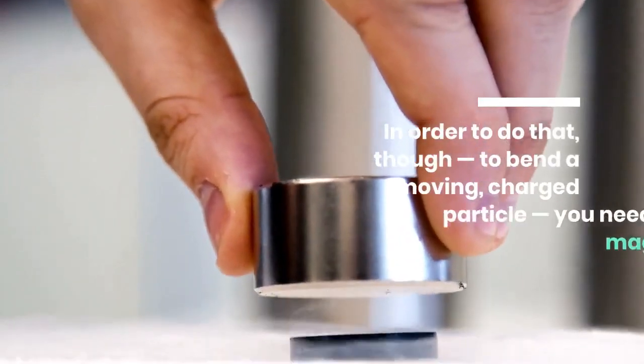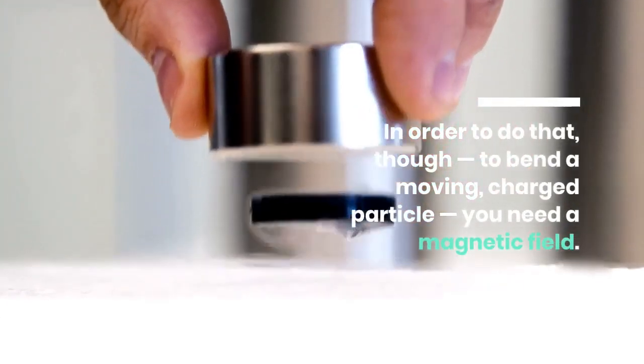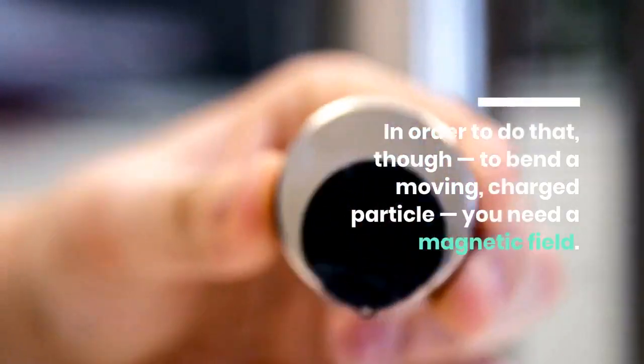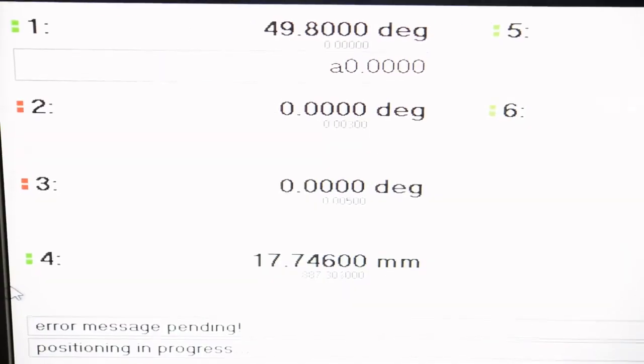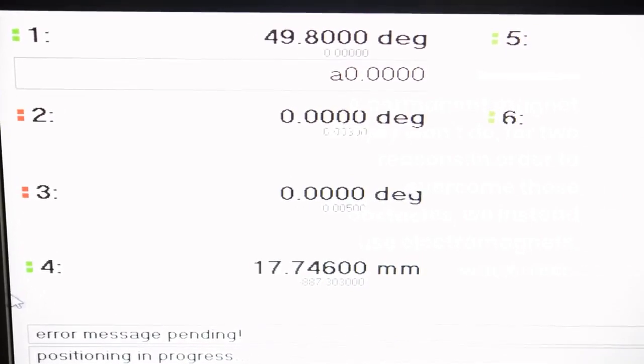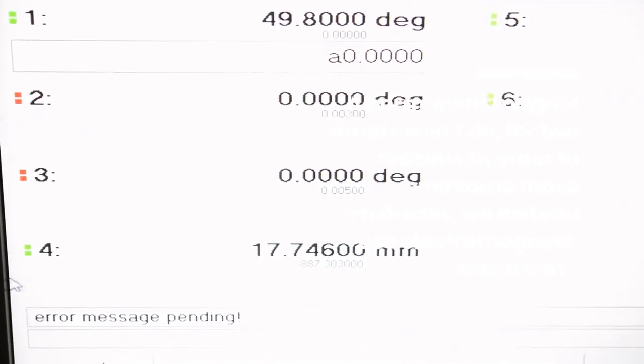In order to do that, though, to bend a moving charged particle, you need a magnetic field. A permanent magnet simply won't do, for two reasons. In order to overcome these obstacles, we instead use electromagnets.